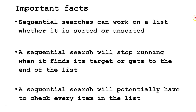Some important facts to know. First, sequential searches can work on a list whether it is sorted or unsorted. A sequential search will stop running when it finds its target, or it gets to the end of the list. A sequential search will potentially have to check every single item in the list.